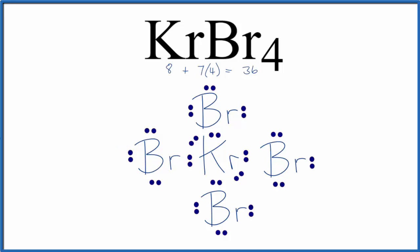You could also write this replacing these electrons here with lines, and that might make it look a little cleaner. But also, if you're concerned that these electrons are in the right place, you could calculate the formal charges. And you'd see the formal charge for each atom here in KrBr4 is 0. So this is the most favorable Lewis structure.